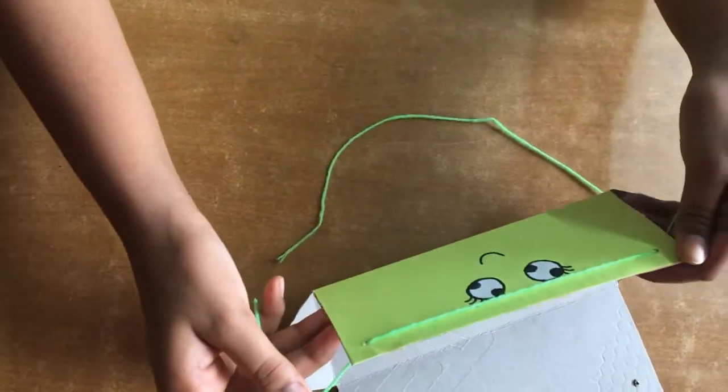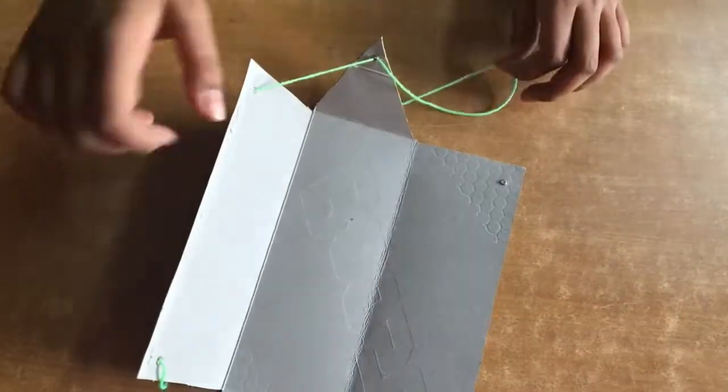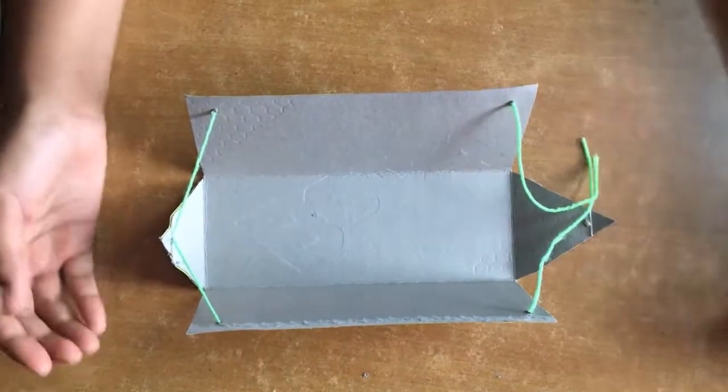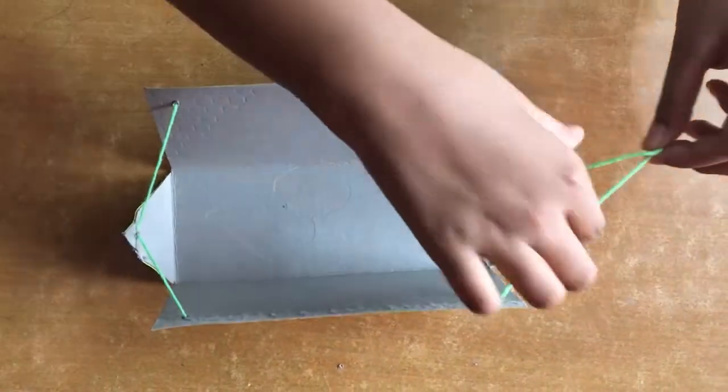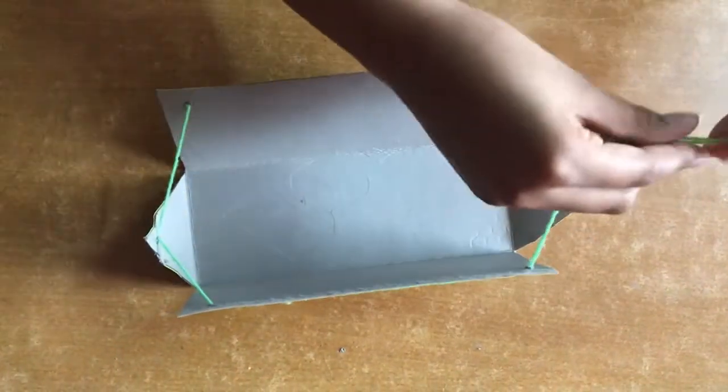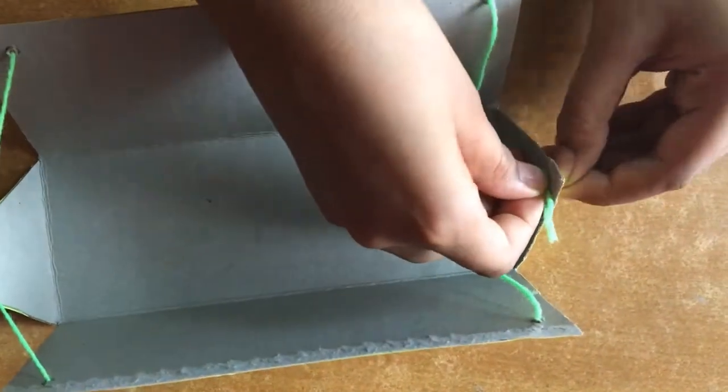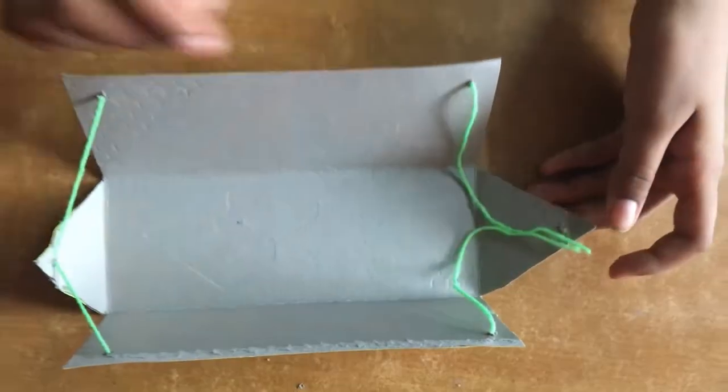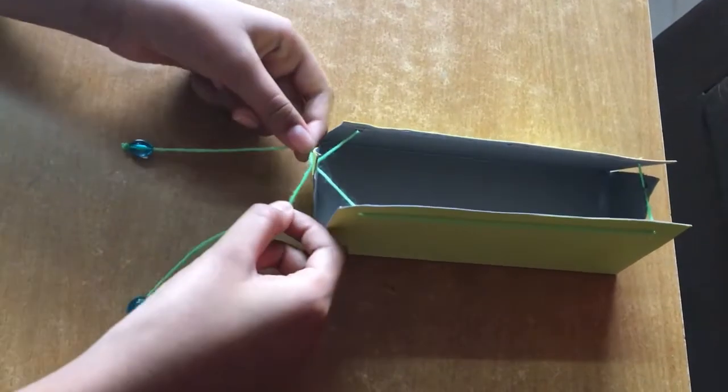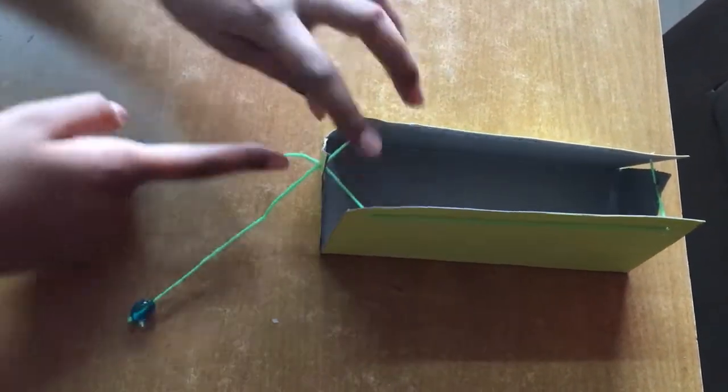We will get it. Same here also. We will do it. So we should do it like this. Then this two thread, you should pull it out of this. Like this. You have to pull it. See you have to put both the thread out of this hole.